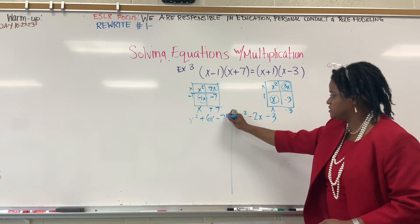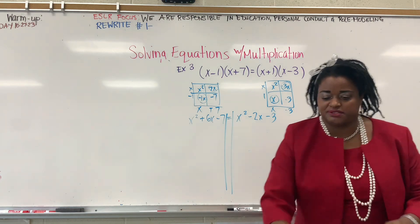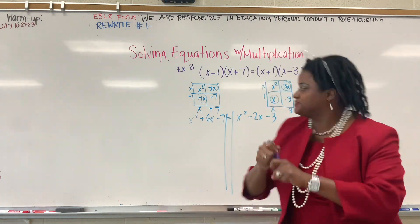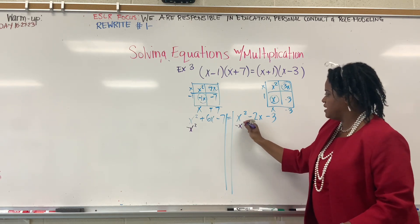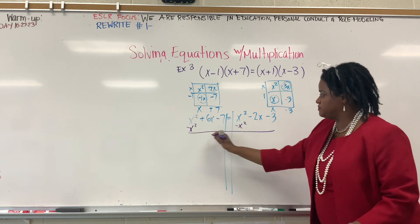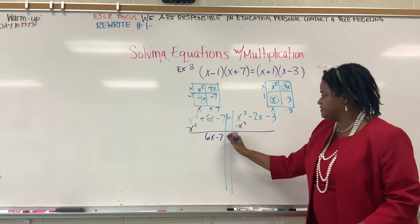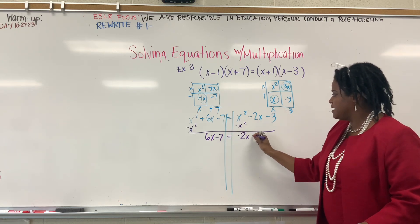Train tracks? Oh, no. My marker's dying. Let's go to purple. Now, I'm going to take out x squared first. And those cancel right out. We have 6x minus 7 equals negative 2x minus 3.